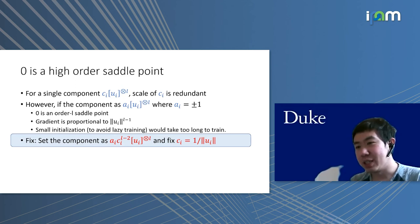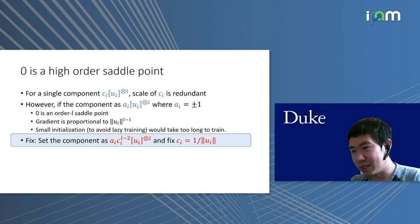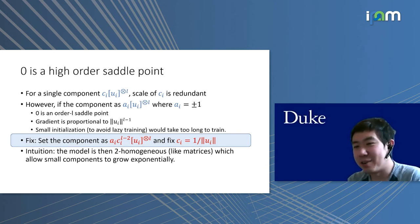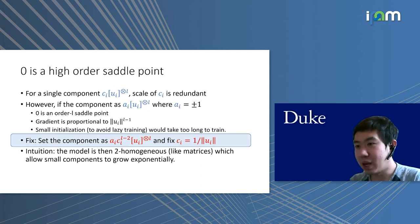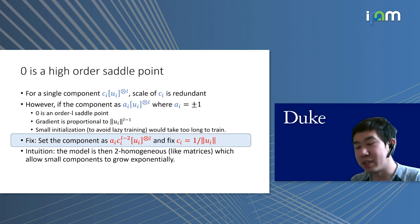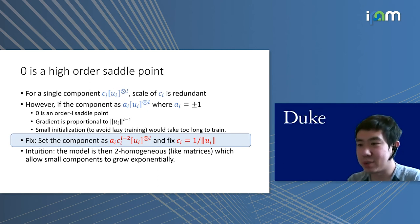To fix this, we reparameterize the components as a_i times c_i to the power L minus two times u_i tensor to the L, and we fix c_i to be one over the norm of u_i. The intuition is to make the model two-homogeneous in terms of component u_i. In the matrix case, this is just parameterized as a_i times u_i u_i-transpose. We are hoping the dynamics of gradient descent on this parameterization are similar to training matrices, where if you run matrix power method, even small components grow exponentially.